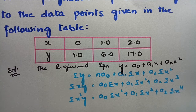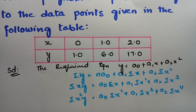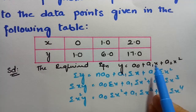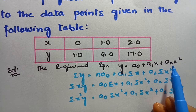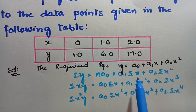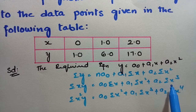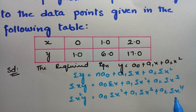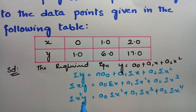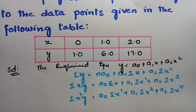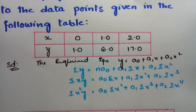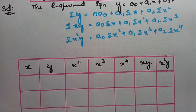Using these equations, we have to calculate a₀, a₁, and a₂ and substitute in the required equation. For that, we need to find Σx, Σx², Σx³, Σx⁴, Σxy, and Σx²y. For that, there is a table.